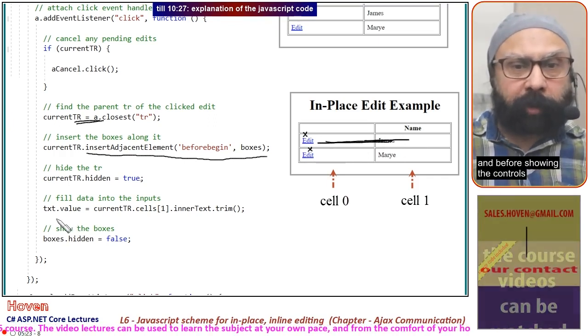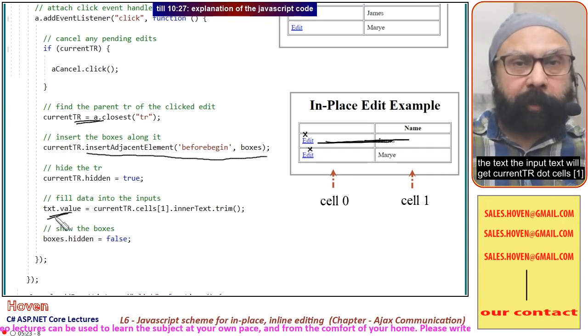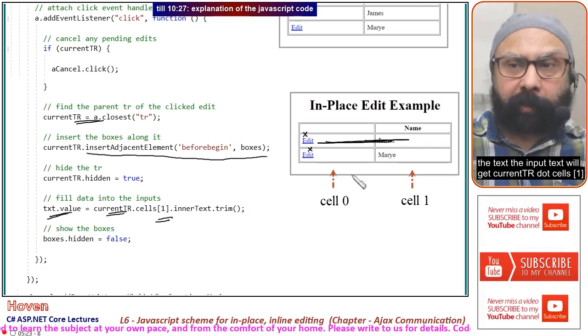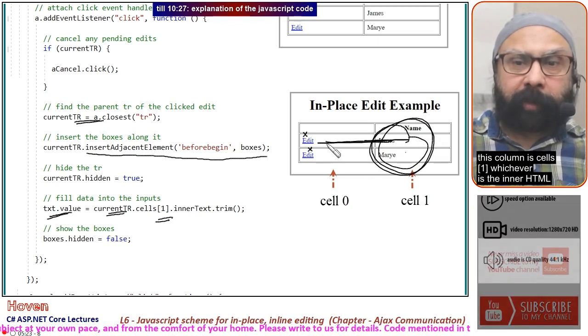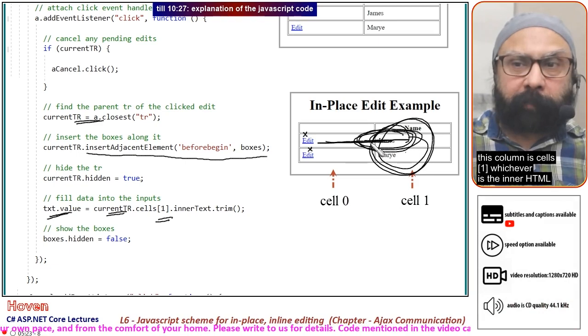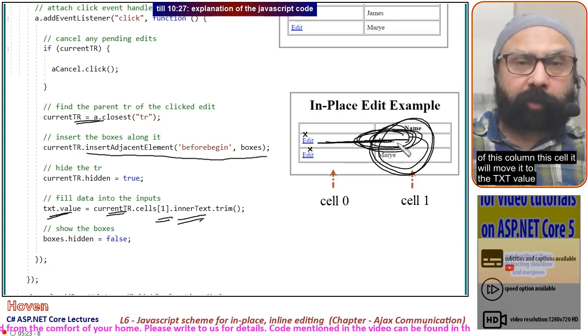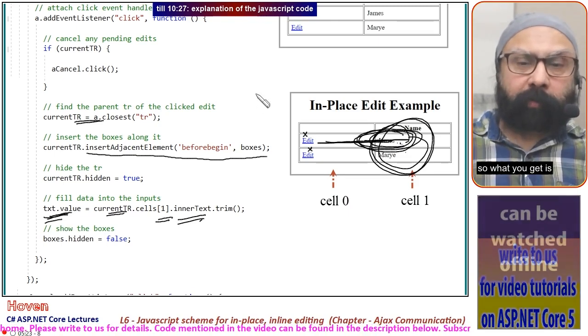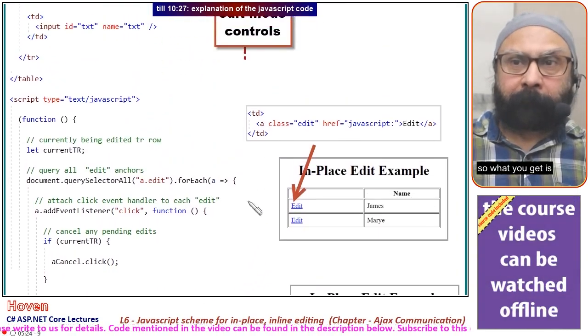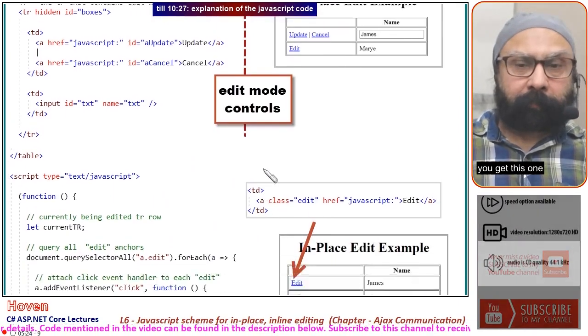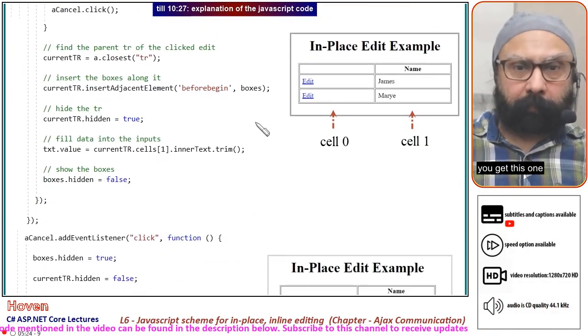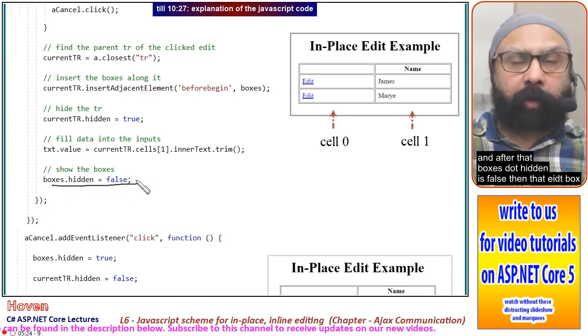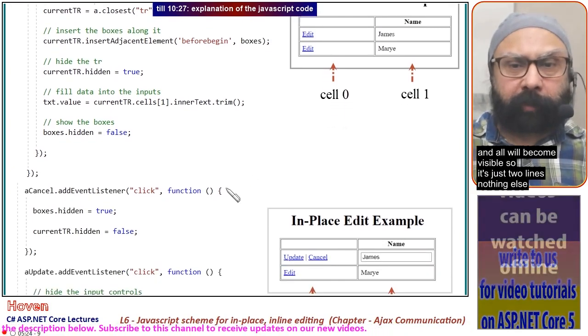Before showing the controls, the input text will get currentTr.cells[1]—this column is cells[1]. The inner text of this cell will move into the txt value. So you get this data in the textbox. After that, boxes.hidden = false, and the edit box becomes visible. It's just two lines.